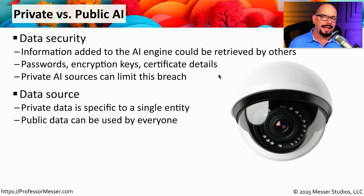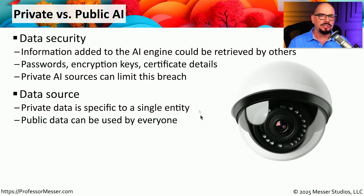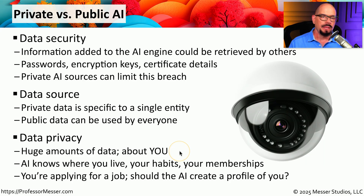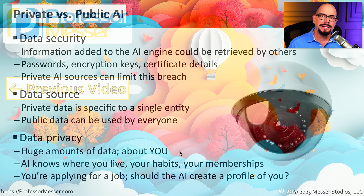There's also a big difference between public and private AI when it comes to how much data they're able to evaluate. A private AI only has data from a single entity, but a public AI is collecting data from everybody on the internet. In those cases, the public AI may be more accurate because it has access to so much more data — but that large amount of data creates concerns about privacy. Some of the information stored by a public AI is information about you: where you live, your previous addresses, your habits and activities on the internet, and details about any memberships and groups you belong to. What type of summary would the AI create of you, and what would be contained within your profile?